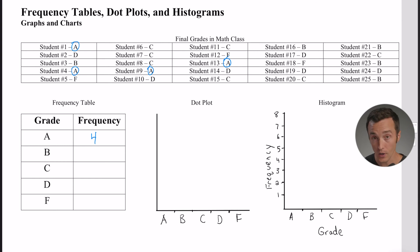So in a frequency table, the first column is going to be whatever your category is. In this case, we're talking about grades. The second column is always frequency - it's always how many of that thing occur.